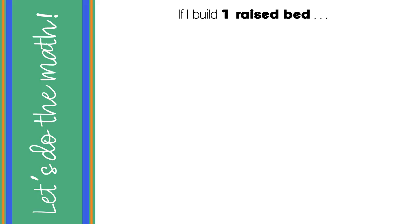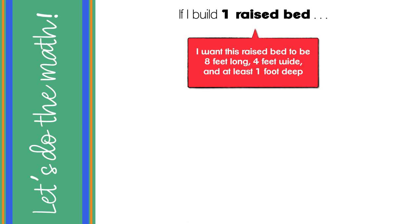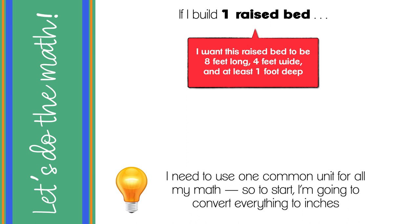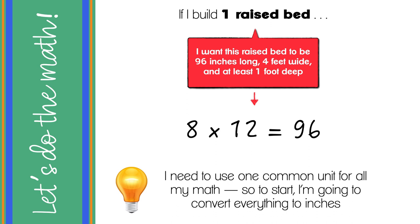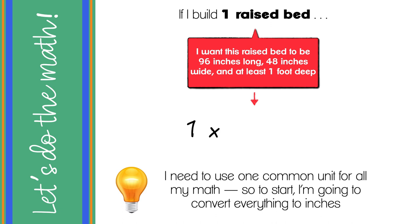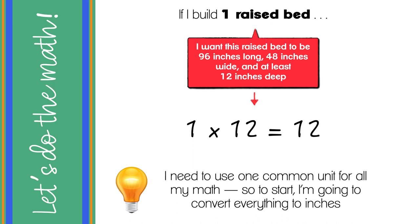So let's do the math. I need to use one common unit, so I'm going to convert everything to inches. Eight feet long — multiply by 12 inches — gives me 96 inches. Four feet wide — four times 12 — 48 inches wide. And that one foot deep — one times 12 — 12 inches. So we're doing our math in inches to have one common unit: 96 inches long, 48 inches wide, at least 12 inches deep. Let's look at blocks first. Concrete blocks are 16 inches long, so how many blocks do I need for the long sides? We do 96 divided by 16, and we come up with six.